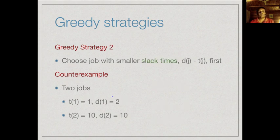A second strategy might be to pick those jobs whose time is closest to the deadline — we look at the slack, how much time we can afford to delay starting a job (d(j) minus t(j)), and pick those which have the smallest slack.